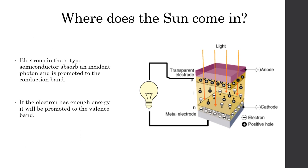Where does the sun come in? Electrons in the N-type semiconductor absorb incident photons from the sun, and therefore they are promoted to the conduction band. If the electron has enough energy to overcome and become promoted to the valence band, a charge is formed.